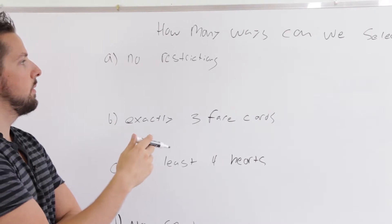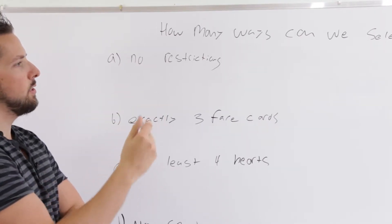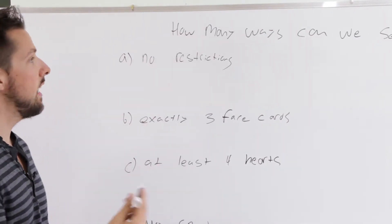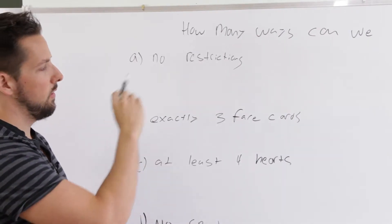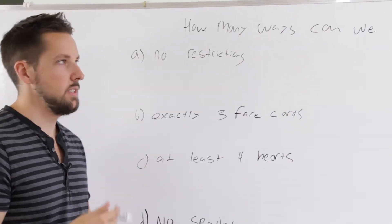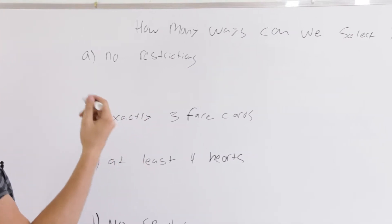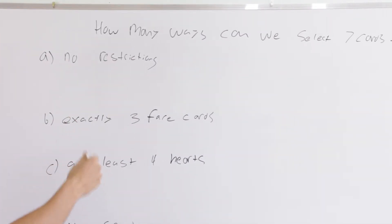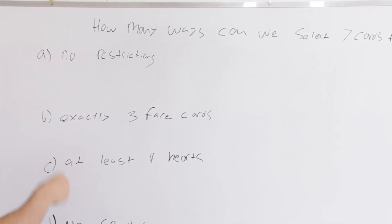Okay, so we're going to do an example. Combination questions and permutation questions can get more confusing, so we'll do an example of one of the most complicated ones that will help you out. So how many ways can we select seven cards from a deck if, and then we have a bunch of different restrictions we have here.